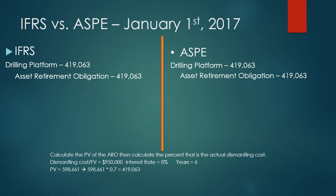The future value or dismantling cost is $950,000. On your financial calculator you would enter FV as $950,000, interest rate of 8%, payment of zero, and N of six years — 2017, 2018, 2019, 2020, 2021, and 2022. Solving for present value gives $598,661. You multiply that by 0.70 — representing 70% — and you get $419,063, because only 70% of the present value of the asset retirement obligation comes from the asset itself.